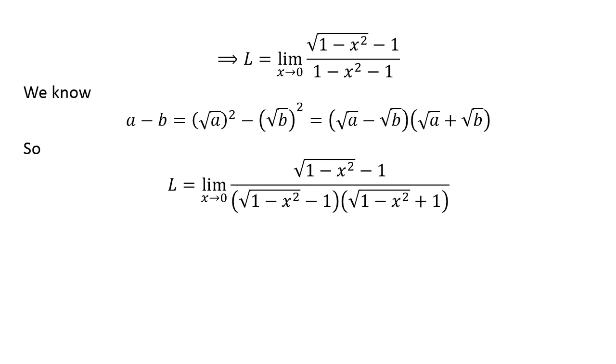Application of the above fact gives us L equals limit of square root of 1 minus x squared minus 1 upon square root of 1 minus x squared minus 1 times square root of 1 minus x squared plus 1 as x approaches 0.